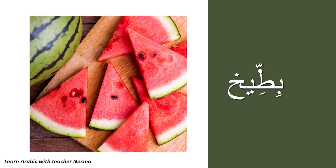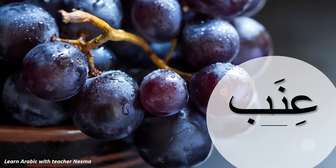Bittīkh, bittīkh — hāza bittīkh. This is watermelon. Tūt — this is grape.